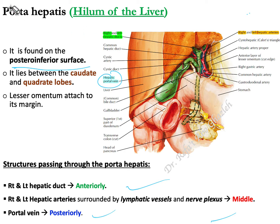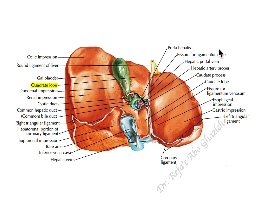Also, the arteries are accompanied by lymphatic vessels and nerve plexuses. These lymphatics drain lymph from the gallbladder and liver back to the celiac lymph nodes.